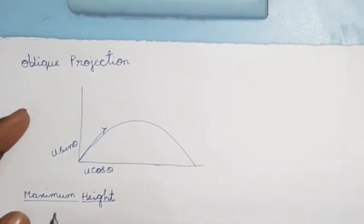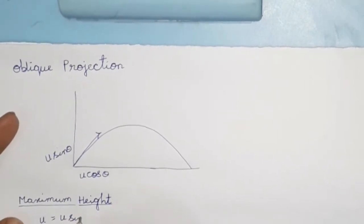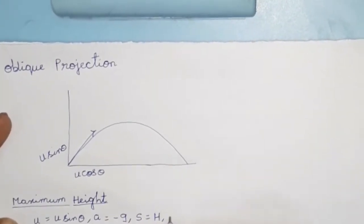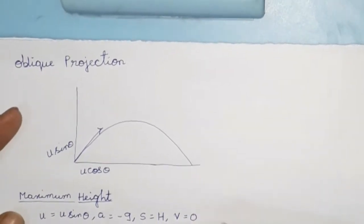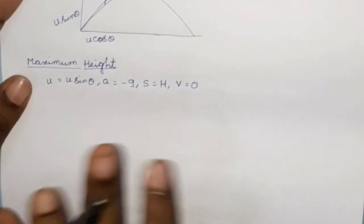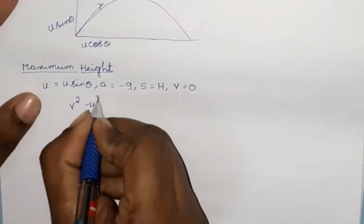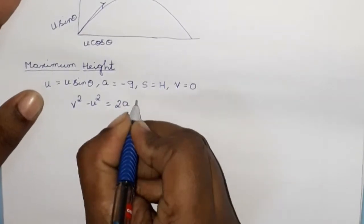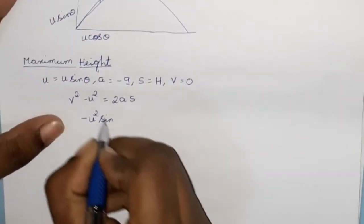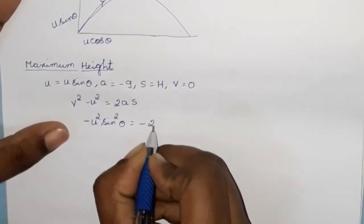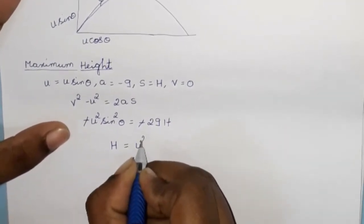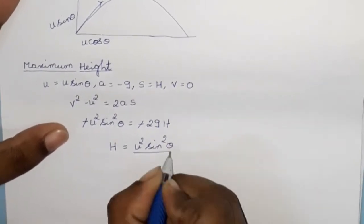For maximum height, the body is moving upward. So u equals u·sinθ, a equals minus g, s equals H (capital H), and v equals 0 at maximum height. Both vertical projection and oblique projection use the same formula: v² minus u² equals 2as. Substituting: 0 minus u²sin²θ equals minus 2gH.